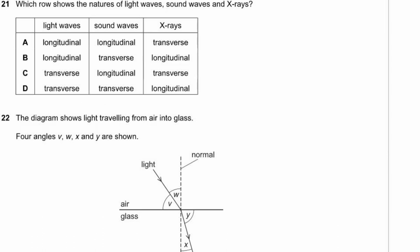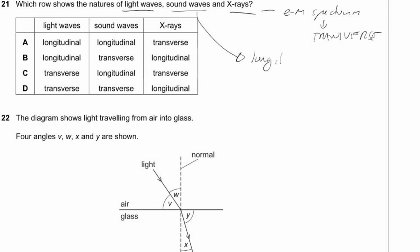Question 21. Which row shows the nature of light waves, sound waves, and x-rays? Light waves and x-rays are both members of the electromagnetic spectrum — they are both transverse waves, with oscillations at 90° to the direction of propagation. Sound waves are longitudinal. Row C: transverse, longitudinal, transverse.